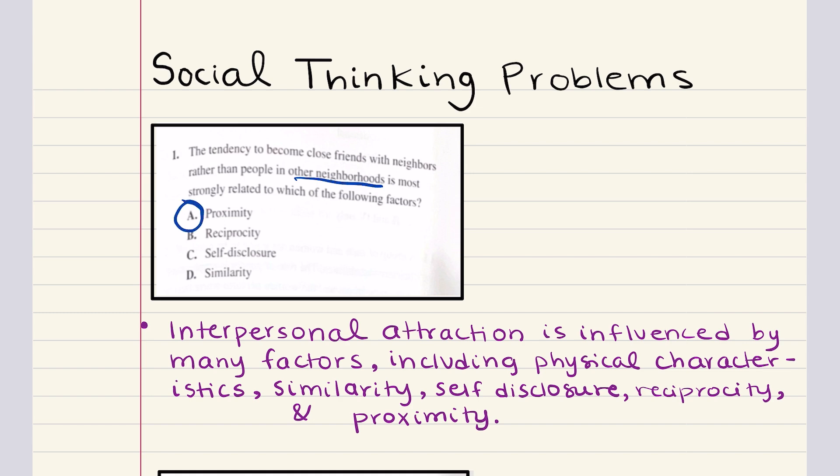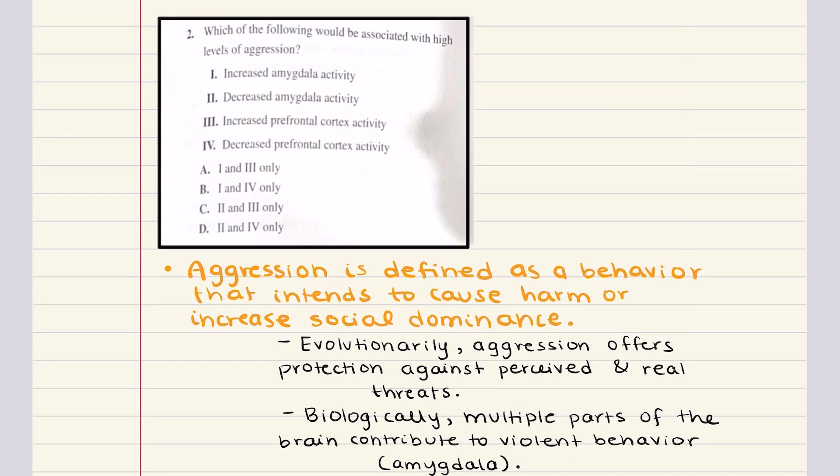Now problem number two says, which of the following would be associated with high levels of aggression? Statement one says increased amygdala activity. Statement two says decreased amygdala activity. Statement three says increased prefrontal cortex activity. And four says decreased prefrontal cortex activity.